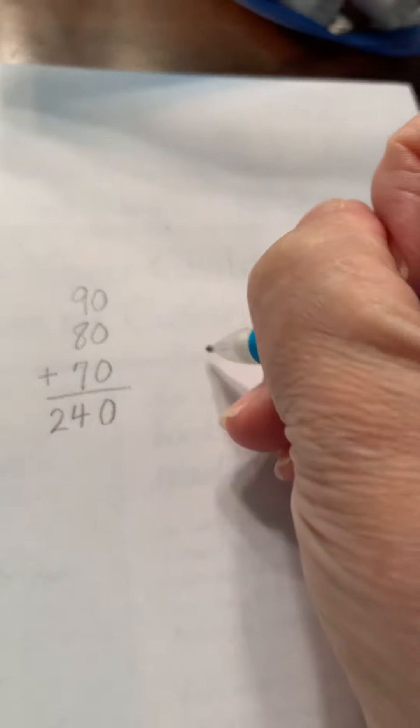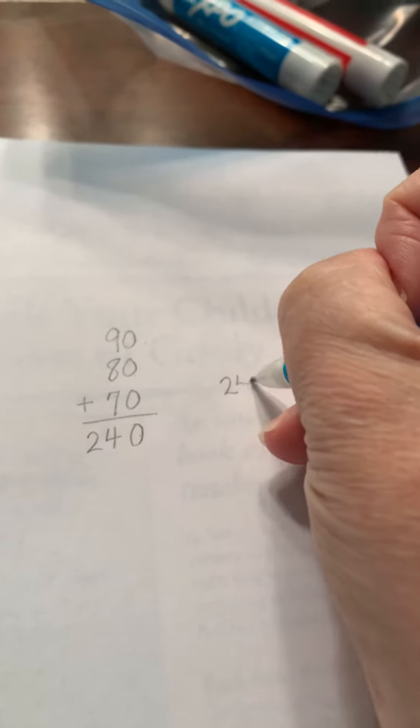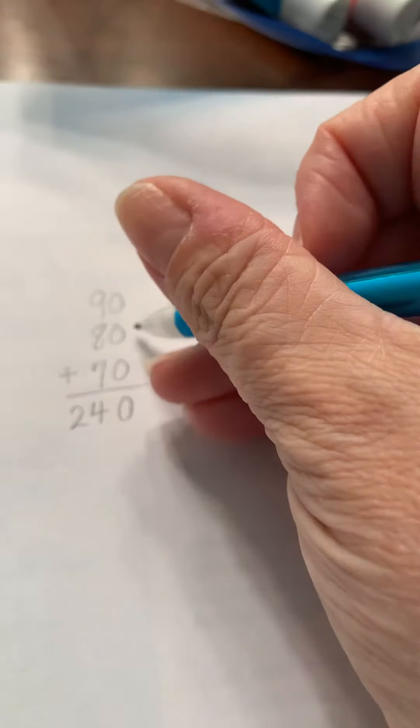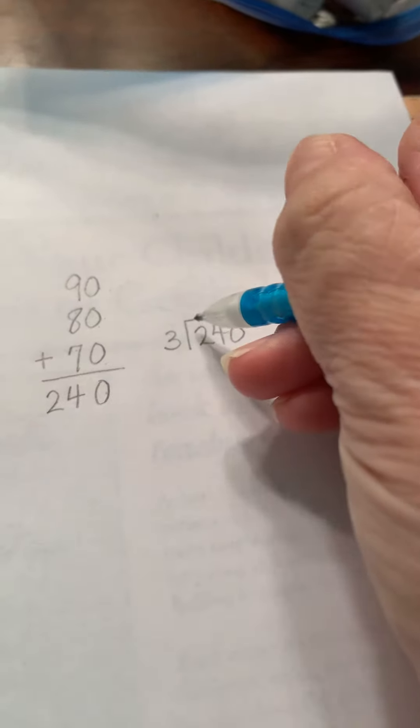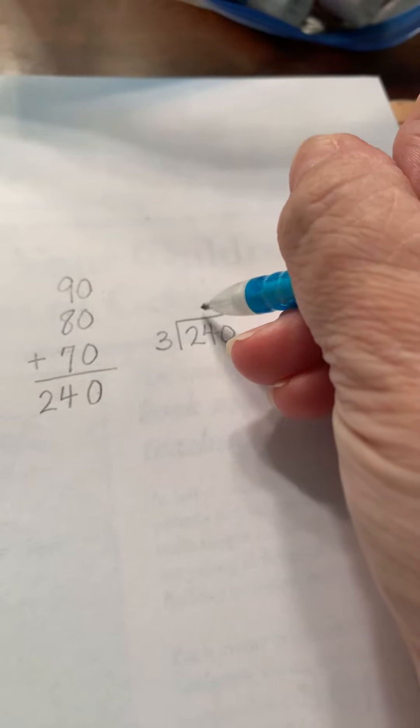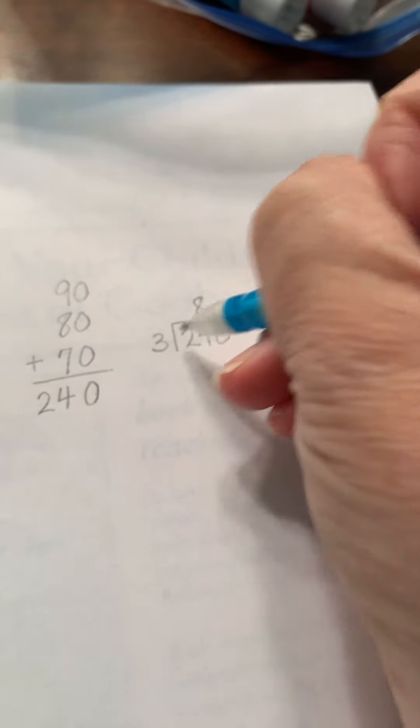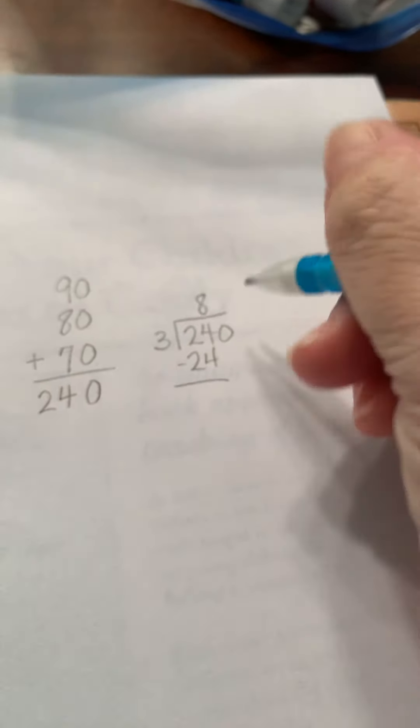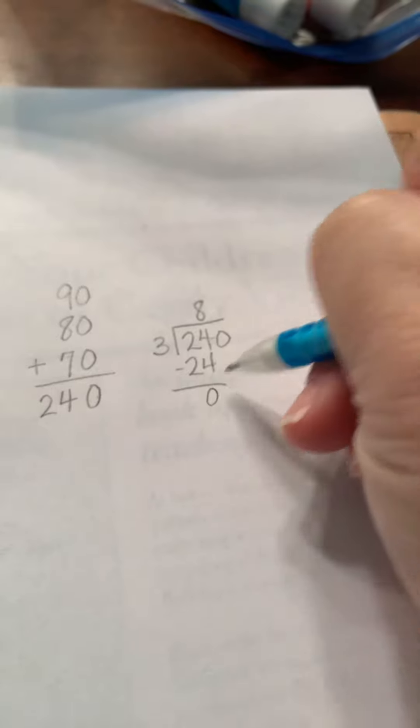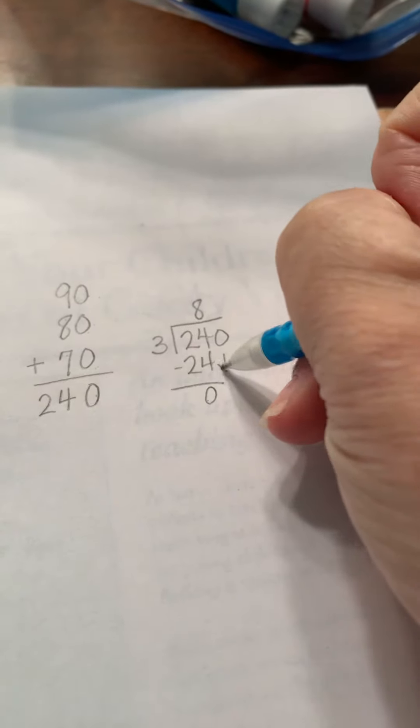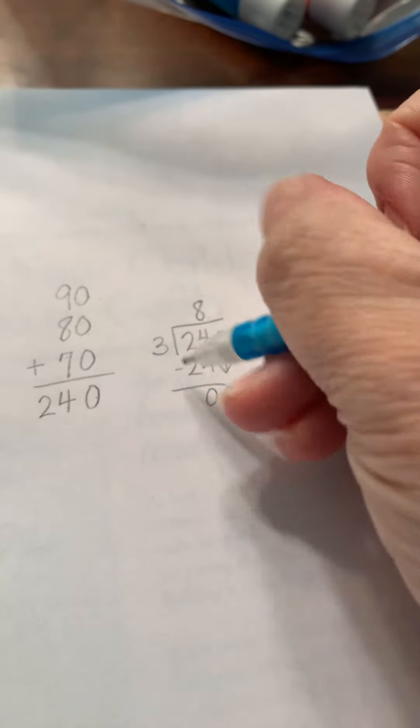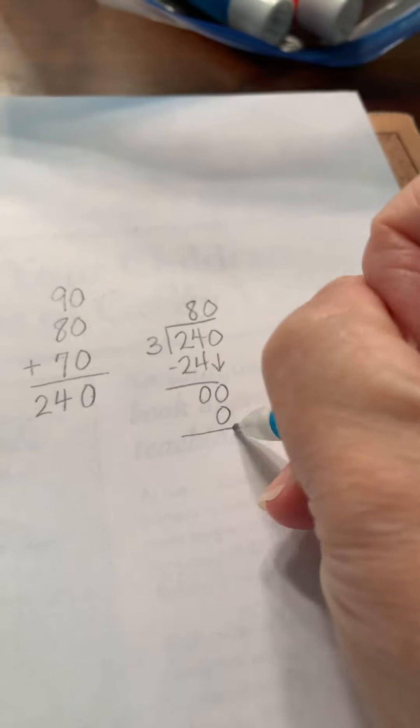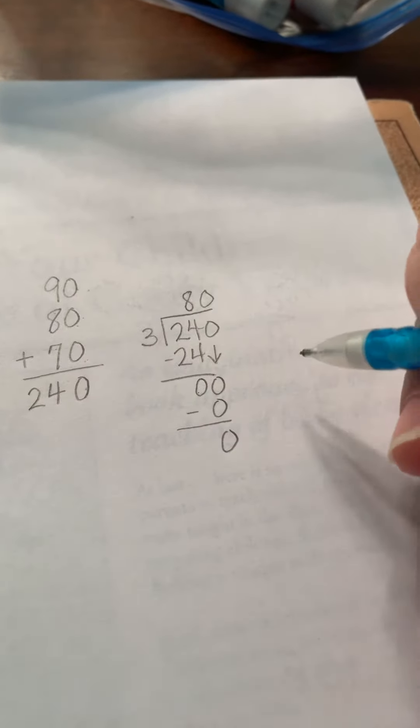And then I would divide 240 by three because there were three grades. So three won't fit into two. It will fit into 24 eight times. Eight times three is 24. So I subtract 24 minus 24 is zero. Zero is less than three. Bring down my zero. Three goes into zero zero times. Three times zero is zero. Subtract and I get zero.